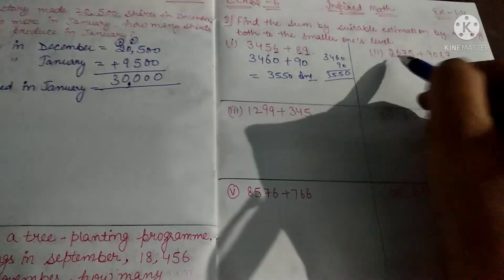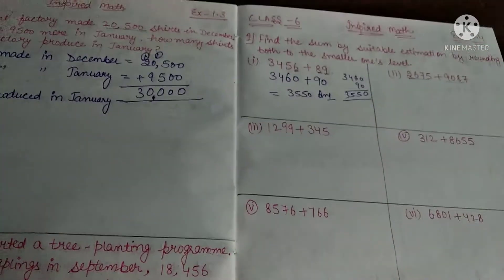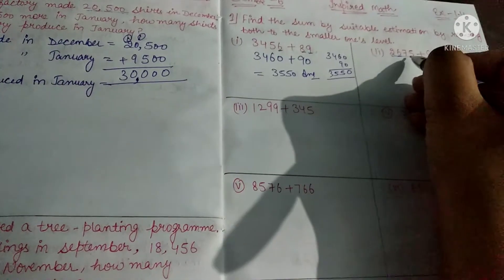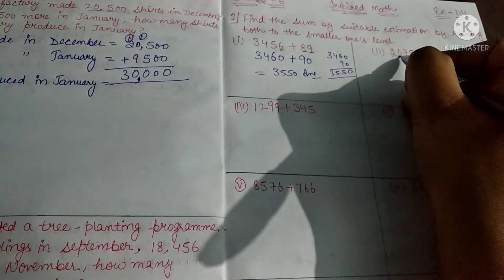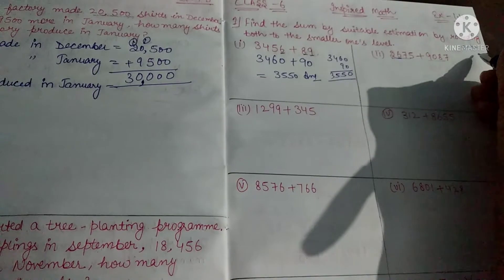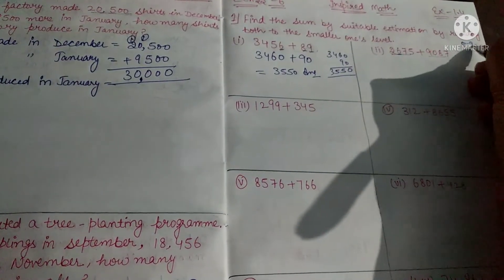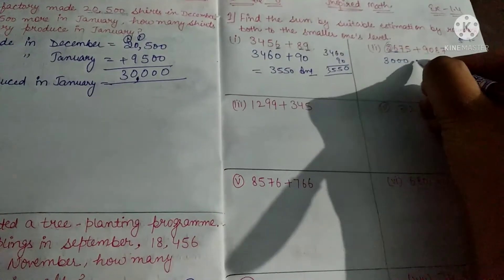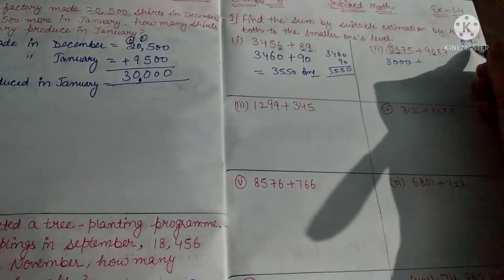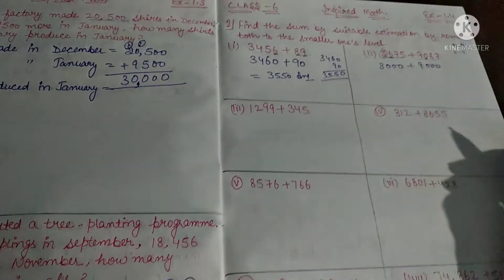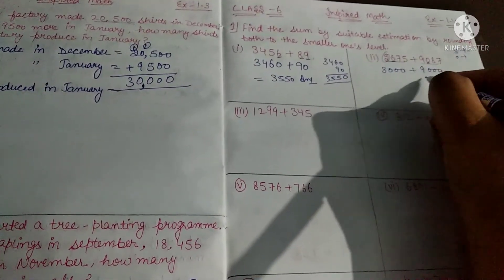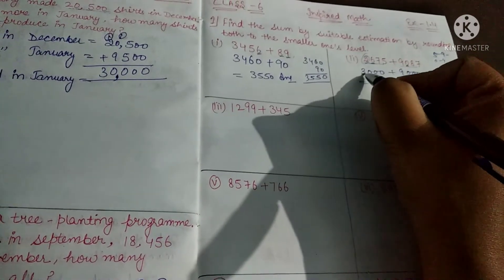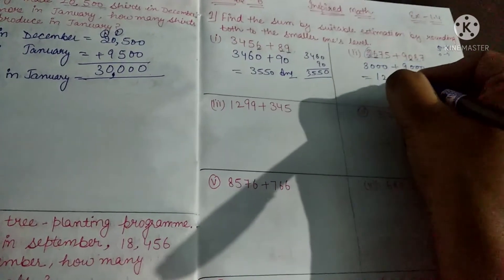Now the value 6 — 6 is between 5 to 9, so we have to add 1. It means it becomes 3000. For the other number, the digit is between 0 to 4, so no change — it remains as it is. Now add both: 9 plus 3 equals 12, giving us 12,000 as the answer.